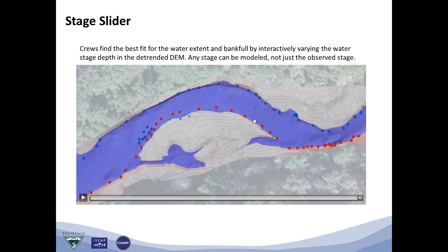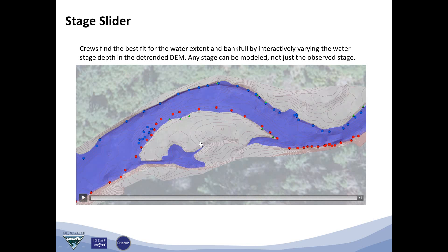This is important because it allows the River Bathymetry Toolkit to model different water stages, not just the one observed when crews visited. This would enable the CHAMP program to perform habitat analysis during extremely dry seasons and at small increments all the way through to extremely wet seasons as well.